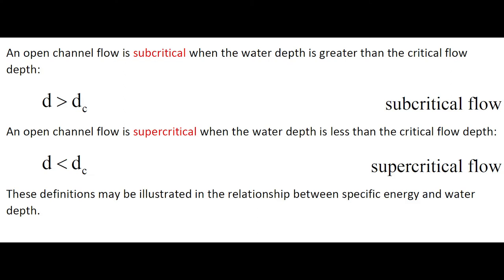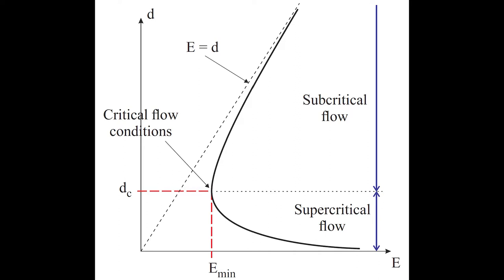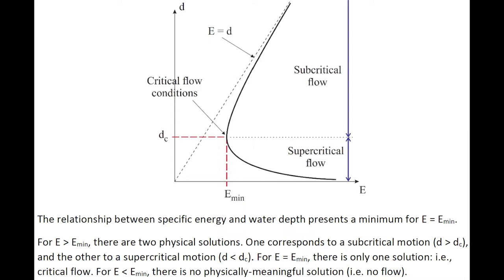An open channel flow is subcritical when the water depth is greater than the critical depth. Conversely, an open channel flow is supercritical when the water depth is less than the critical depth. These definitions are illustrated in the relationship between the specific energy and the water depth, which presents a minimum at E minimum. When the specific energy is greater than the minimum specific energy, there are two physical solutions.